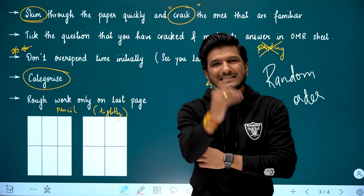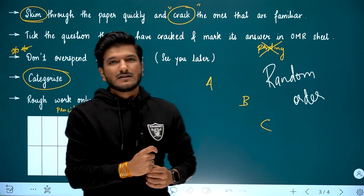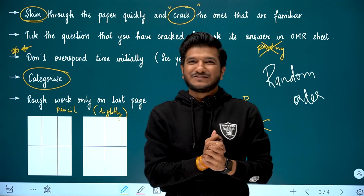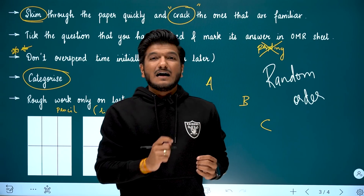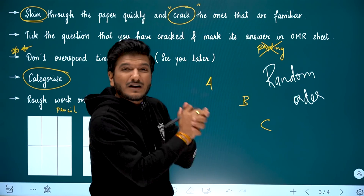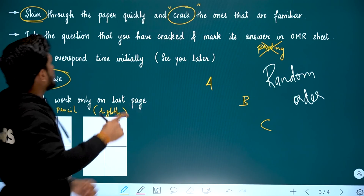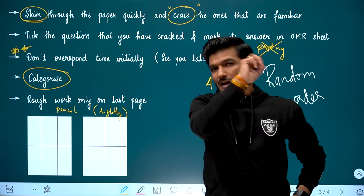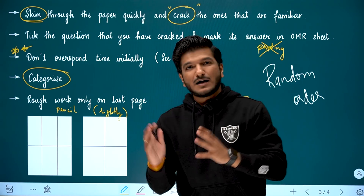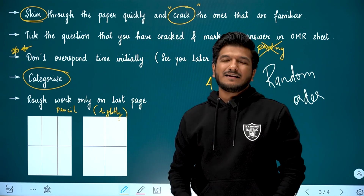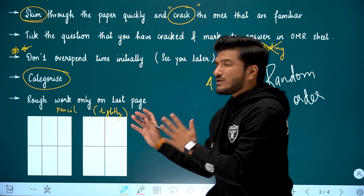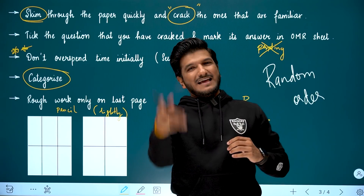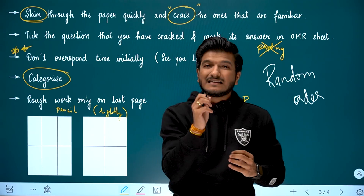Another thing: when questions are printed in the question paper booklet, there is space next to each question. Whether you are allowed to do rough work there depends on the exam center and the situation. But if you do write in the margins of the question paper, please write very lightly — I really mean lightly — so that at the end you can take 5 to 10 minutes to rub it all out. Officially, the last page is what's expected, but it happens everywhere. Just make sure to write lightly and rub it out.